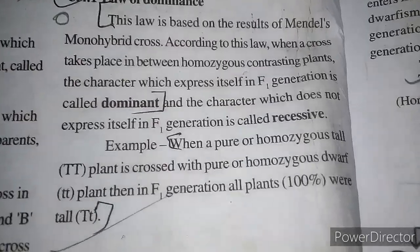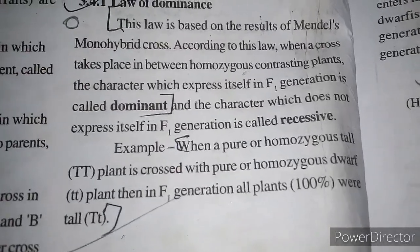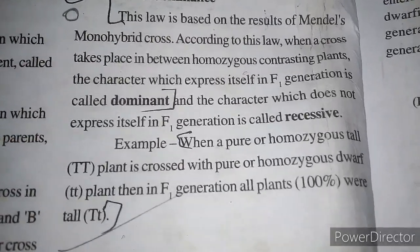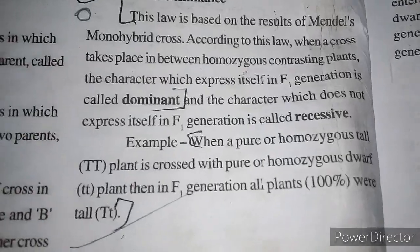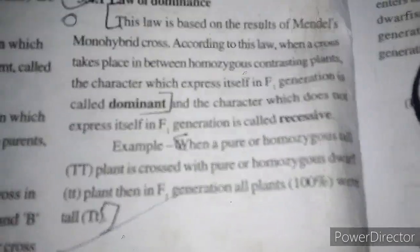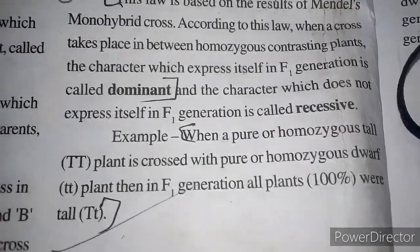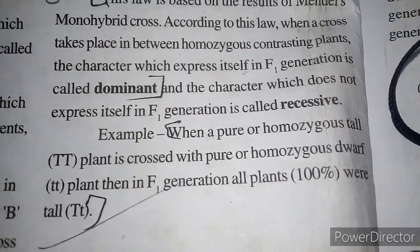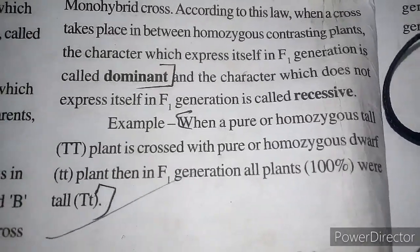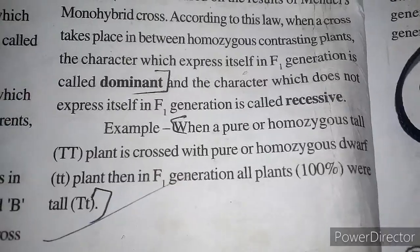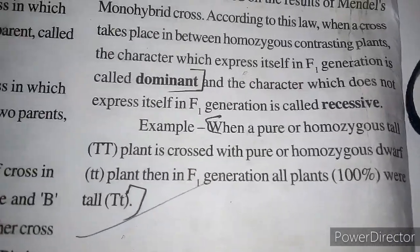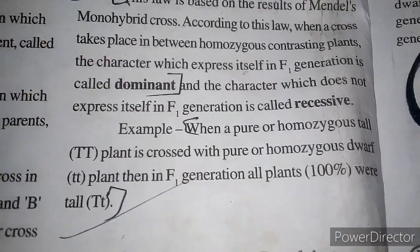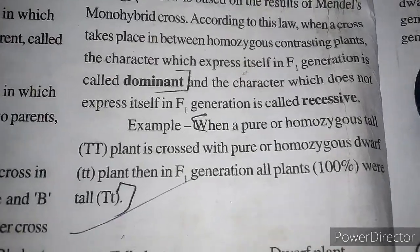According to this law, when a cross takes place between homozygous contrasting plants, the character which expresses itself in the F1 generation is called dominant, and the character which does not express itself is called recessive.